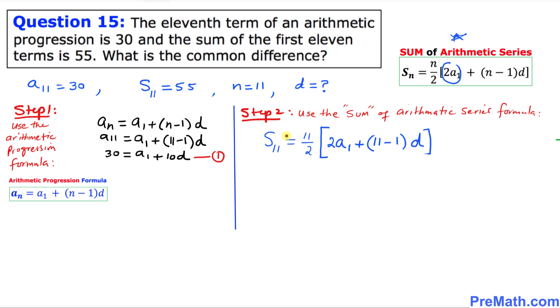But we know that S of 11, the sum of the 11 terms, is 55. So I'm going to replace this. S of 11 is 55 equals 11 over 2. And let's simplify this one. That's going to be 2A1. 11 take away 1 is going to be 10D.